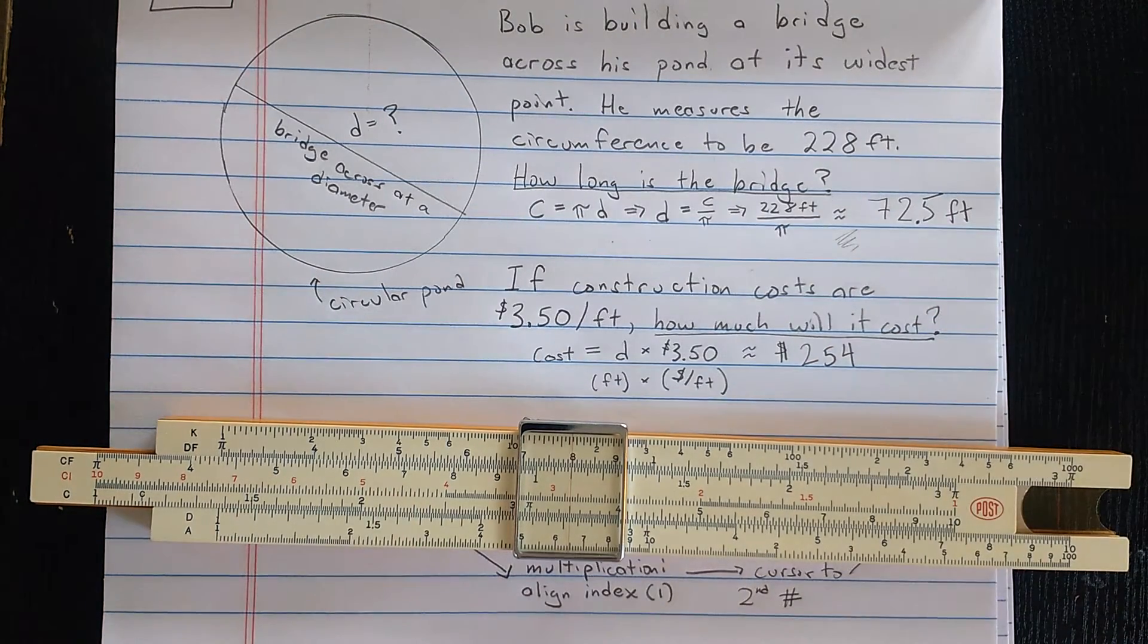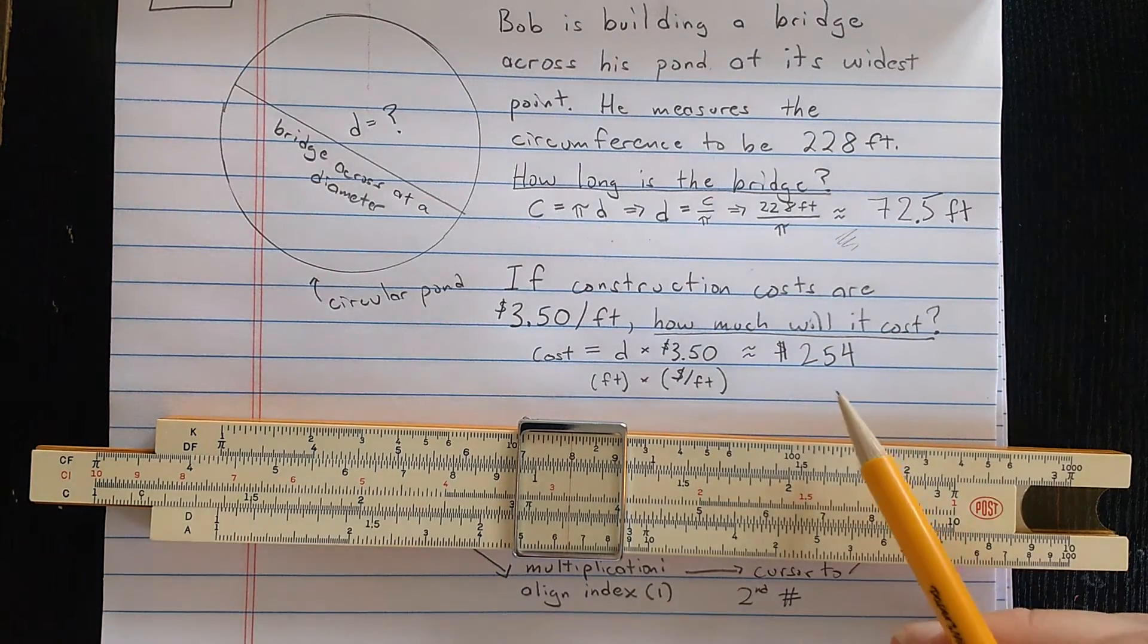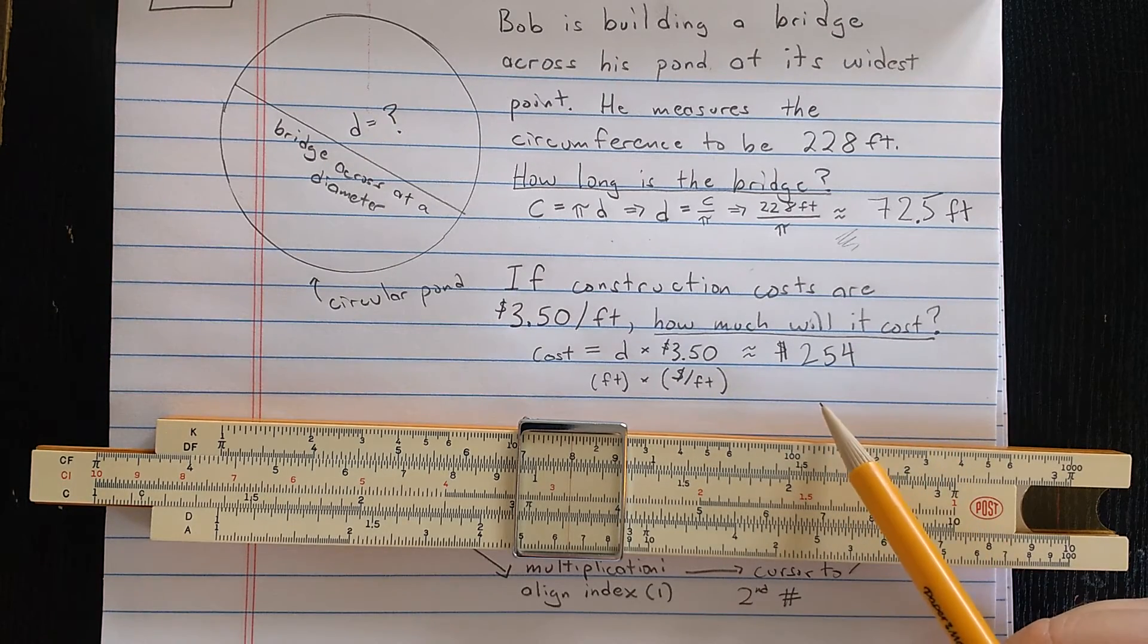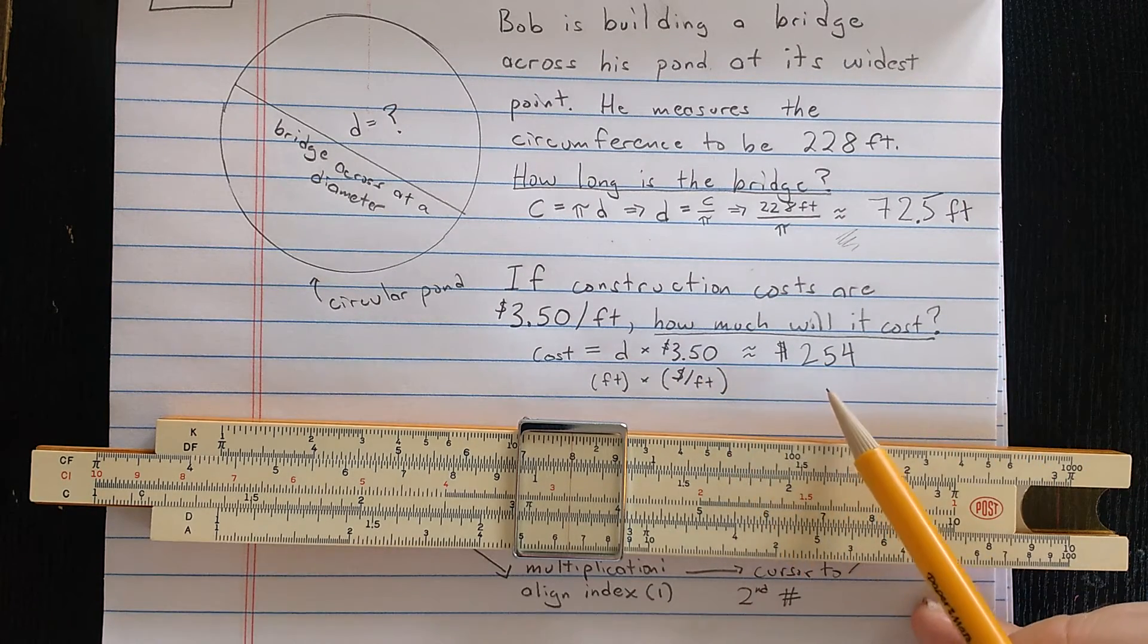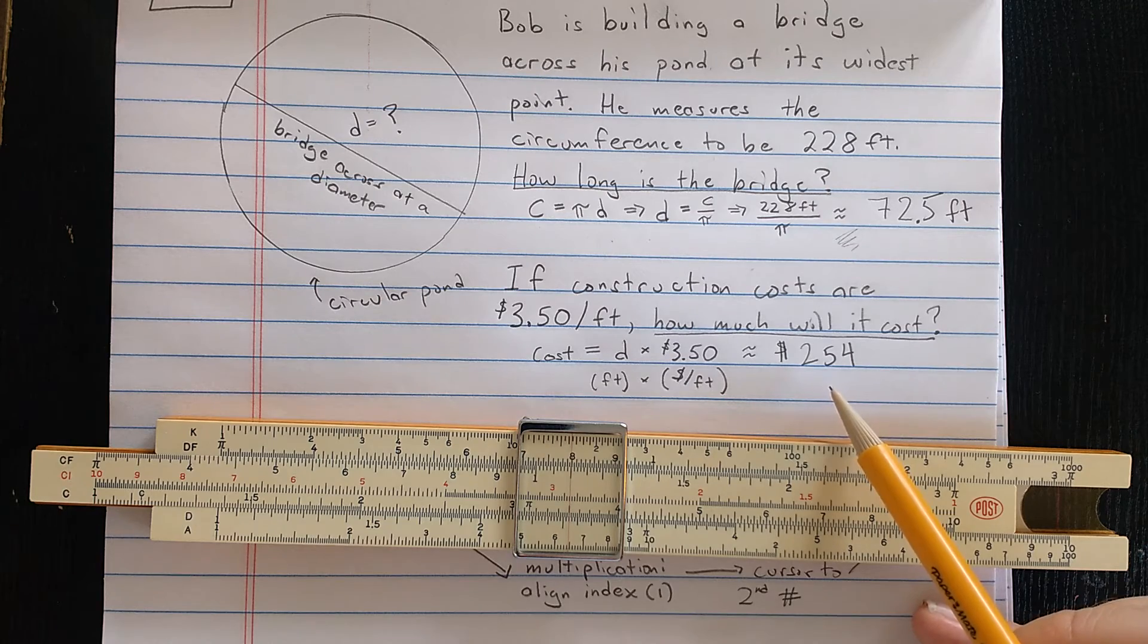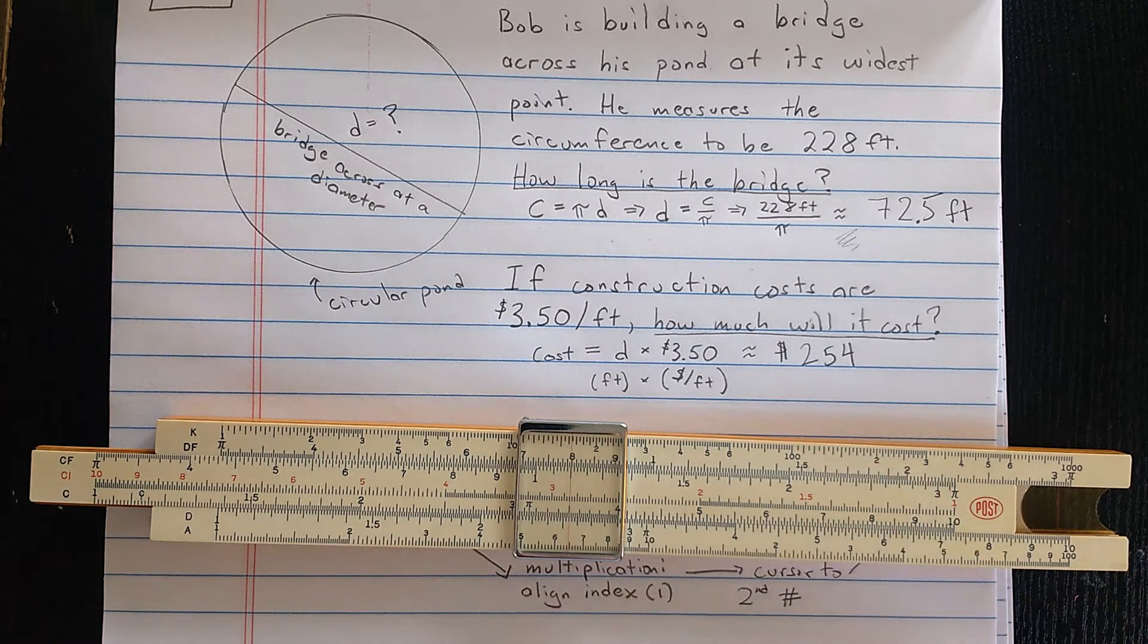But again, on the slide rule, I need to make sure I have the decimal place correct. If I have about 70 times 3, that would be 210. So 254 is going to be about right. But again, this is an approximation.